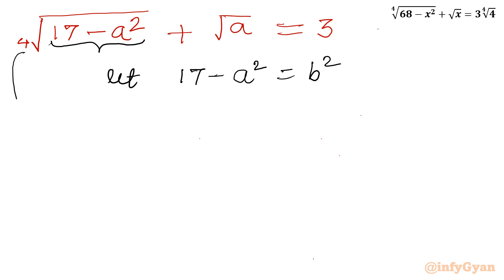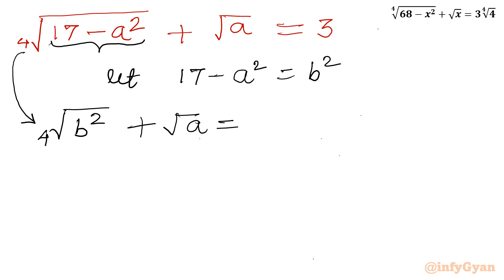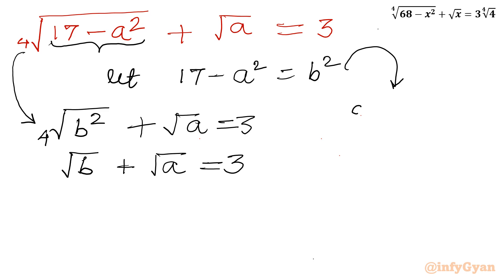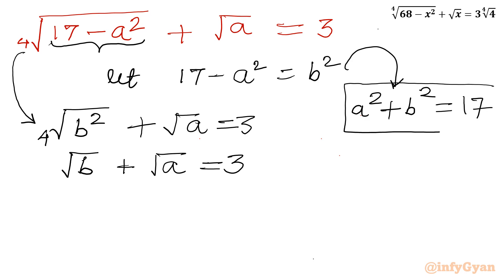Substituting B squared under the 4th root: 4th root of B squared plus square root of A equals 3. Since the 4th root of B squared simplifies to square root of B, we get: square root of B plus square root of A equals 3. From the substitution equation, A squared plus B squared equals 17. This is our first equation and our second equation respectively.